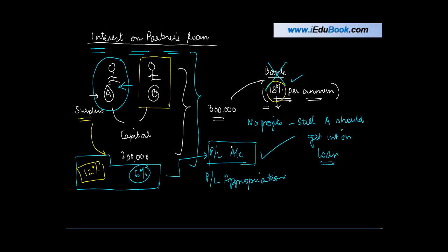The second thing is that when A gave this loan, let's say for example, he never said, what's the kind of interest I'm looking for on this loan? There's nothing mentioned in the partnership deed also. No mention in partnership deed. Then what will happen?